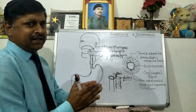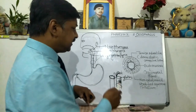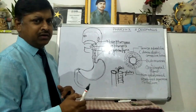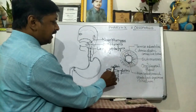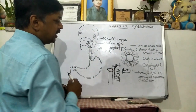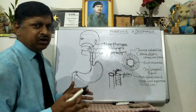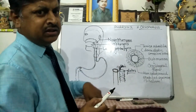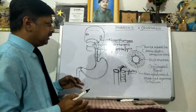Both openings — the gullet and the glottis — are very close to each other, so there is a chance of food particles entering the trachea at the time of deglutition. To prevent this, nature has provided a cartilaginous flap called the epiglottis. The epiglottis prevents food particles from entering the trachea at the time of swallowing.